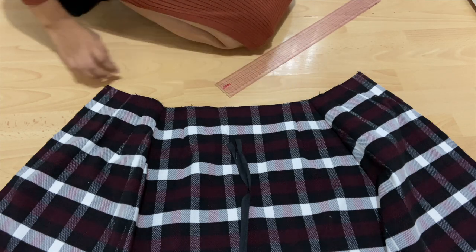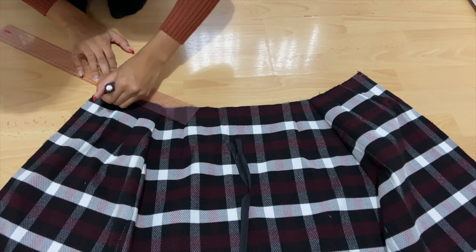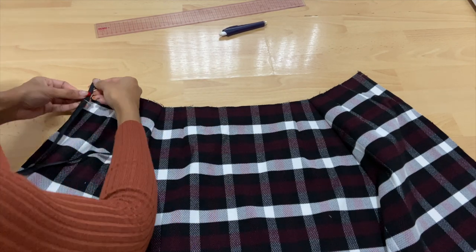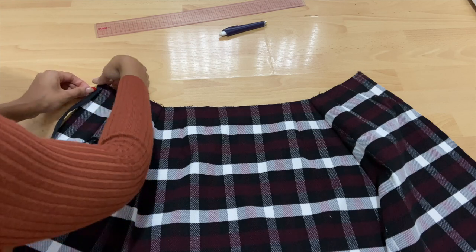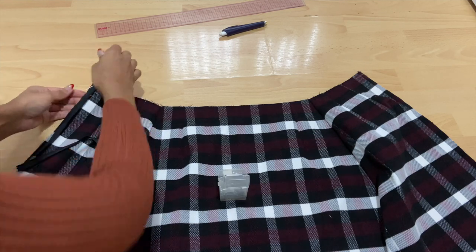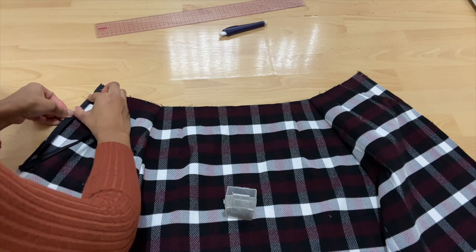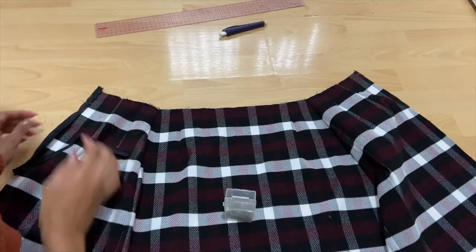First I placed my skirt down right sides facing up and marked one centimeter in and down on my skirt. Then place the zipper right sides facing the skirt against the edge and double check that the zipper teeth are away from the edge of the garment. Then I pinned the top of the zipper where the pull stops to the marking we made earlier and pinned it in place.